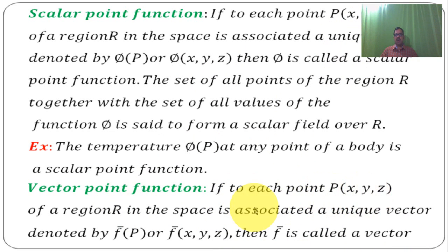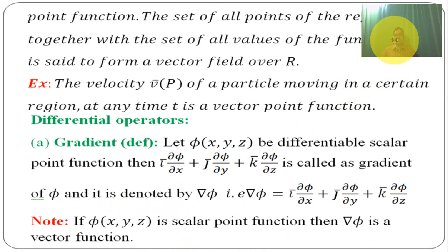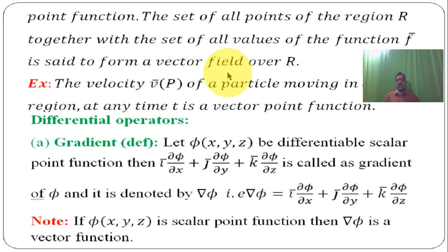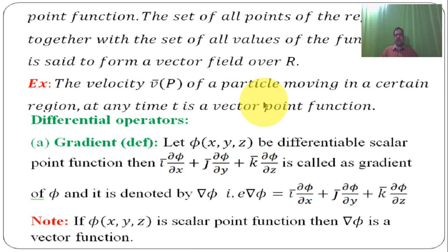Vector point function: if to each point p of (x, y, z) of the region R in space is associated a unique vector, it is denoted by f̄(p) or f̄(x, y, z), then f̄ is called a vector point function. The set of all points of region R together with the set of all values of f̄ is said to form a vector field over the region R. Example: the velocity v̄(p) of a particle moving in a certain region at any time t is a vector point function.